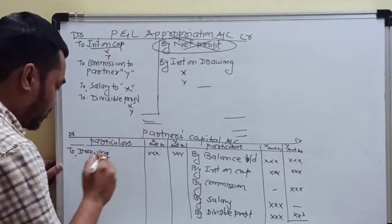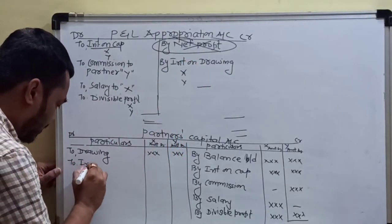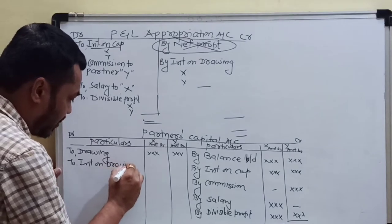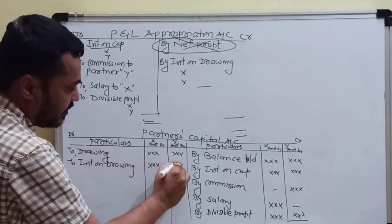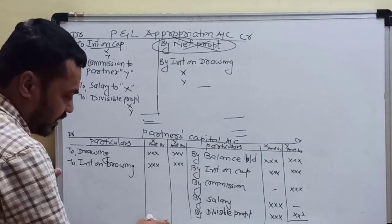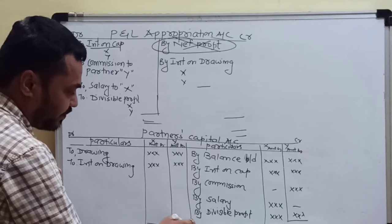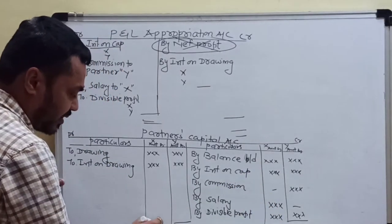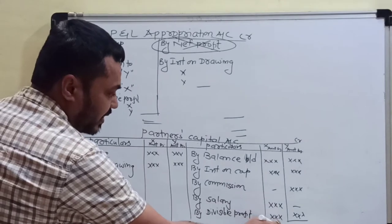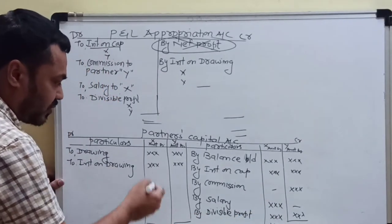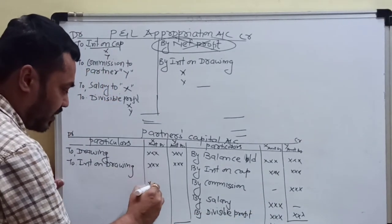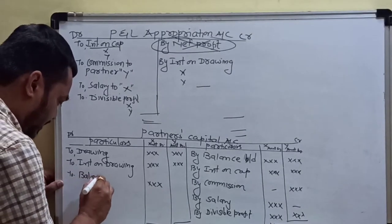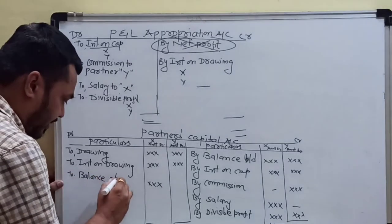Here we will write interest on drawing on the debit side. This interest on drawing is written as a minus, and then we have the balance carried forward.